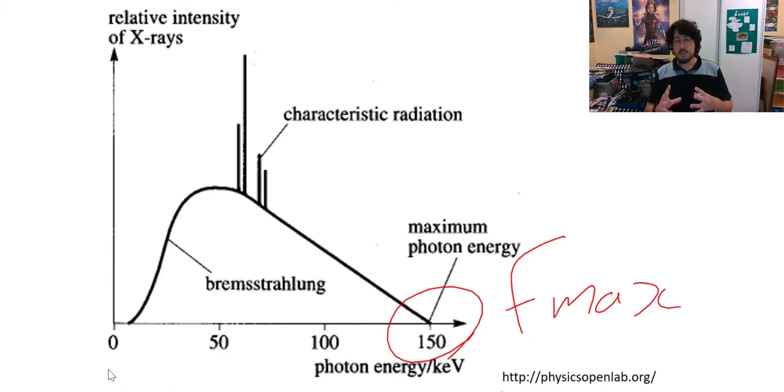So if you increase the voltage across the x-ray tube, but you keep the current, i.e. the amount of electrons per unit time flowing across the tube the same, you're going to affect the graph. What you're going to do is cause there to be a new higher maximum frequency.